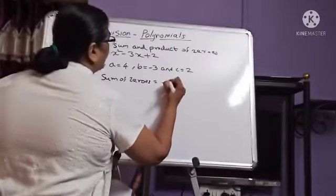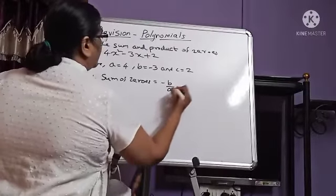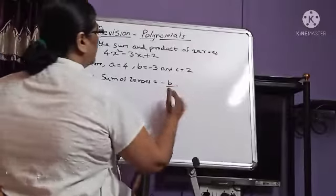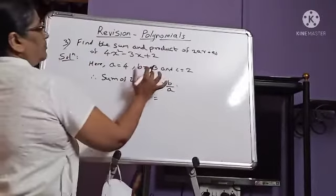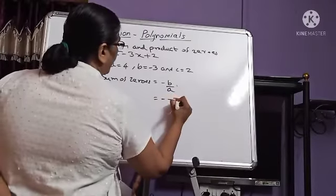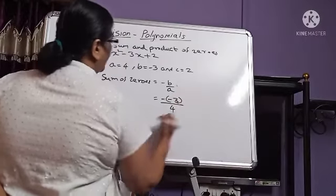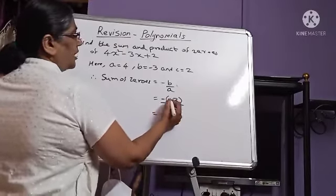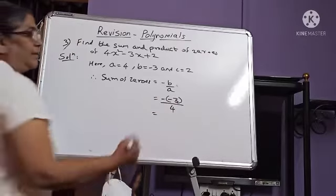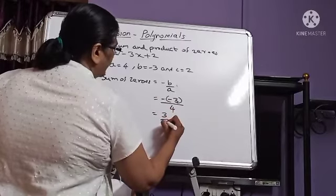Minus B upon A, that is equal to minus 3 upon A is equal to 4, that is equal to 0. Plus 0 is equal to 0, this is equal to 0.